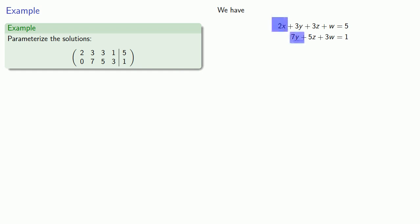X and y are leading variables, so they'll be basic variables. Z and w are never leading variables, so they'll be our free variables and we'll parameterize them. Our pivots are 2 and 7, so we'll parameterize z and w with a factor of 2 times 7, or 14.